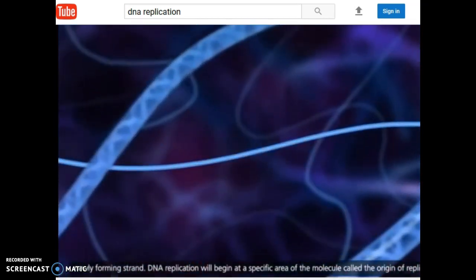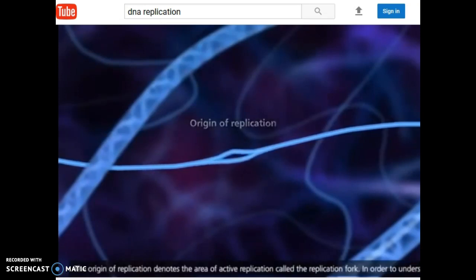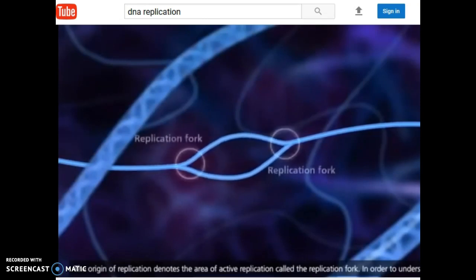DNA replication will begin at a specific area of the molecule called the origin of replication. The origin of replication denotes the area of active replication called the replication fork.